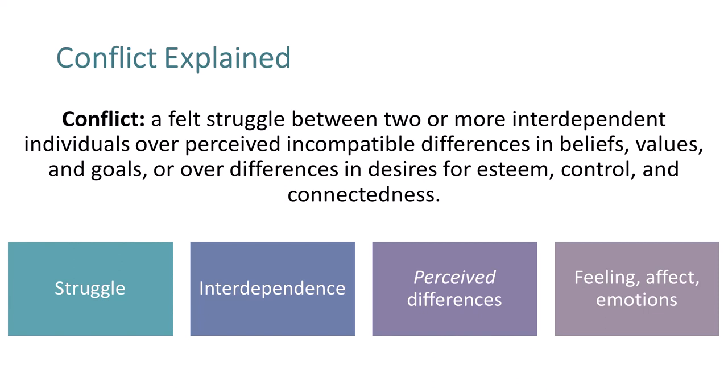Second, we have interdependence. In interpersonal conflict, the parties involved must be interdependent in some way. In other words, only if what one party does affects the other party or parties is there a potential for conflict.